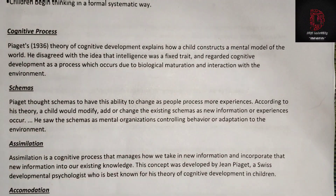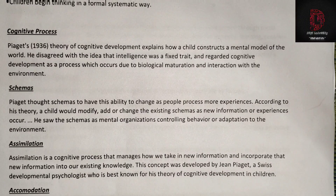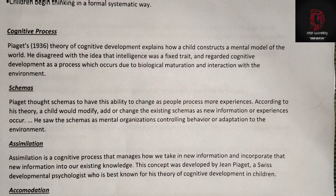Piaget's theory of cognitive development explains how a child constructs a mental model of the world. He disagreed with the idea that intelligence was a fixed trait and regarded cognitive development as a process which occurs due to biological maturation and interaction with the environment. Regarding schemas: Piaget thought schemas have the ability to change as people process more experiences. A child would modify, add, or change existing schemas as new information or experiences occur. He saw schemas as mental organizations controlling behavior and adaptation to the environment.